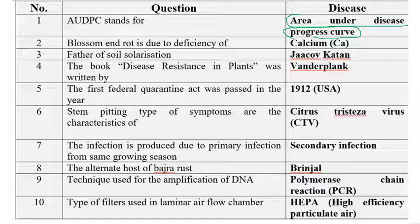The next question: blossom end rot is due to the deficiency of what? Blossom end rot of tomato is caused by calcium deficiency. The next question: who is the father of soil solarization? Jacob Katan is considered the father of soil solarization.